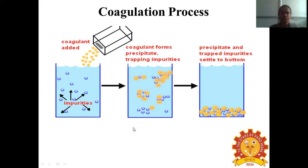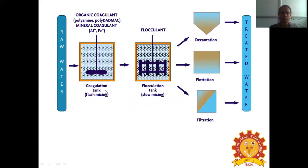The coagulation process involves: the coagulant is added, impurities react with the coagulant, the coagulant forms precipitate wrapping the impurities, and then the precipitate and wrapped impurities settle at the bottom as sludge. The coagulation tank uses flash mixing where the coagulant is added, followed by the flocculation zone with no mixing. Then there are three processes — sedimentation, flotation, and filtration — by which the formed flocs are removed and converted into treated water.